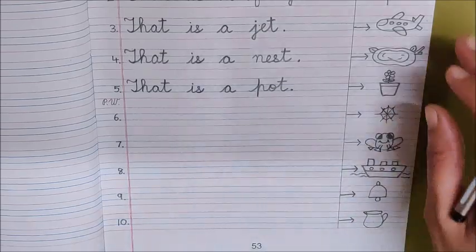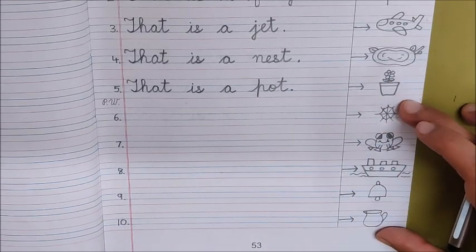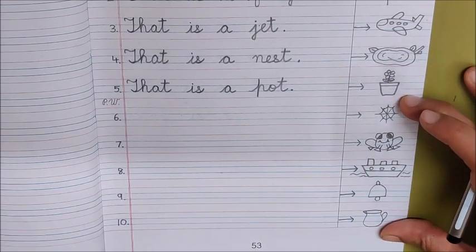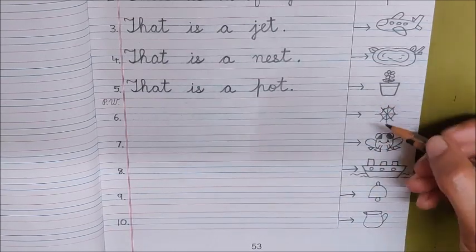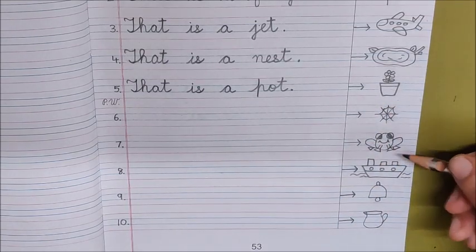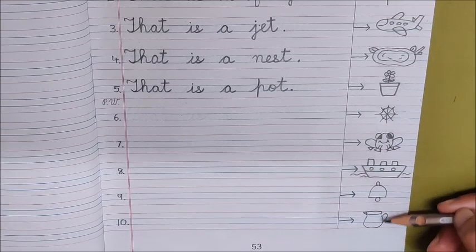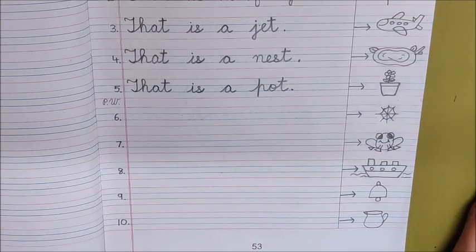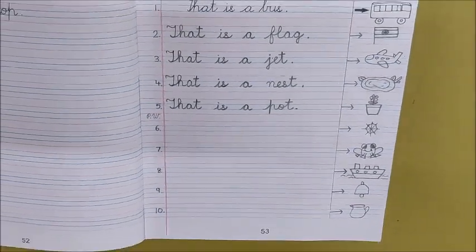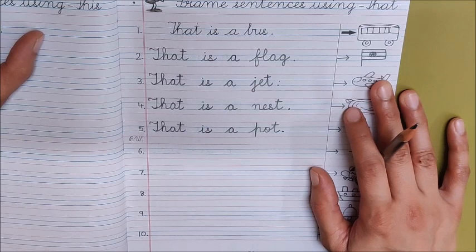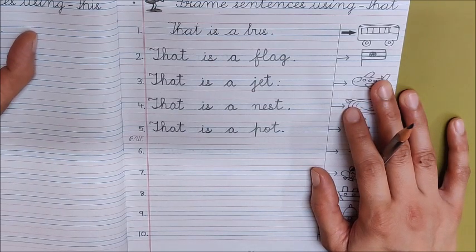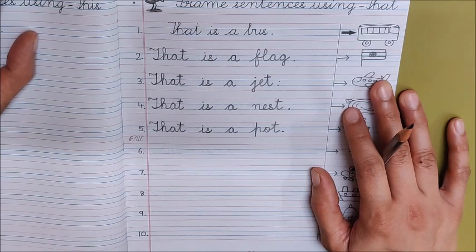Now children, for rest of these pictures, you will make sentences on your own using that. You will make sentences on web, frog, ship, bell and jug using that. And then after completing your work, you will send photo of it to your class teacher. We will be waiting. Bye children. Take care.